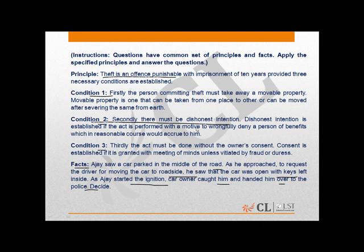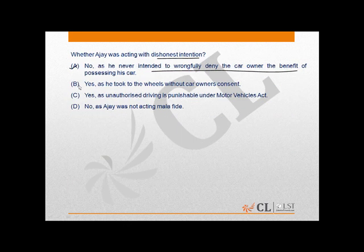If you read the facts, we get to know that there was no dishonest intention. In fact, the facts do not disclose any dishonesty — whether the intention was dishonest or not. Rather, Ajay approached the car to merely request the driver to park on the roadside, as is clear from the facts. So, applying principle number two to the given set of facts, we get to know that A is the correct answer.